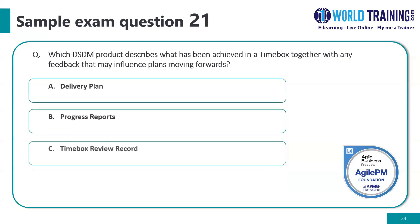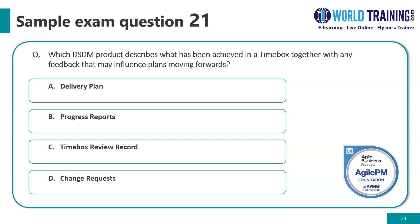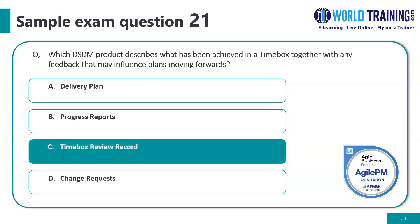Question number twenty-one: which DSDM product describes what has been achieved in a time box, together with any feedback that may influence plans moving forward? The correct answer is: time box review record.